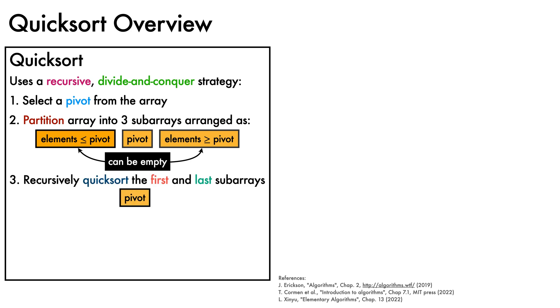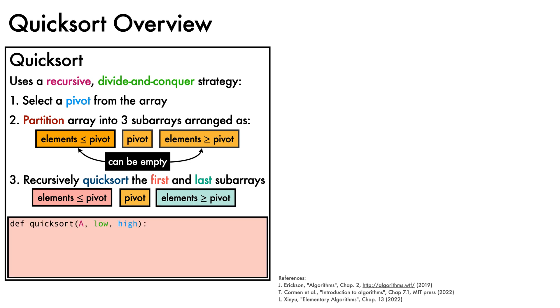Third, we recursively call Quicksort on the first and last subarrays. We can implement Quicksort as a Python function that takes in an array together with the indices of the low-end and high-end of the subarray that remains to be sorted. If the low index remains below the high index, we call a partition helper function that selects a pivot and rearranges the elements according to step 2. Then we recursively call Quicksort, first on the left subarray, and then on the right subarray.